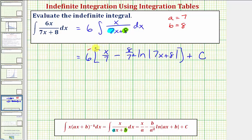Let's go ahead and distribute the six. So we have six sevenths x minus six times eight is 48, seven squared is 49. So we have 48 forty-ninths times natural log absolute value of seven x plus eight, plus C.